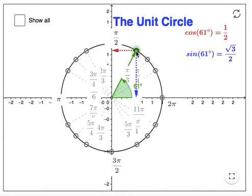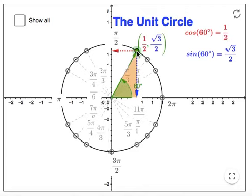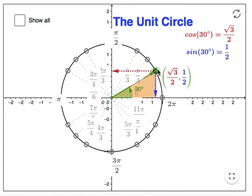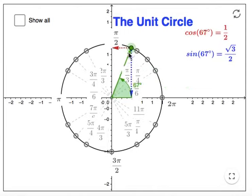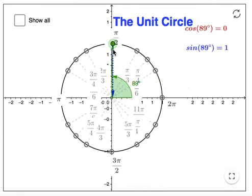As we move to 60 degrees, notice that the horizontal and vertical switch compared to the 30 degrees. The horizontal is now 1 half and the vertical is now root 3 over 2 — that's just the opposite way around from the 30 degree angle, so those two are related. At 90 degrees, the positioning is important: cosine is 0 for the horizontal and sine is 1 for the vertical.